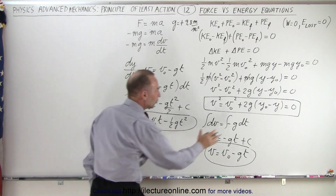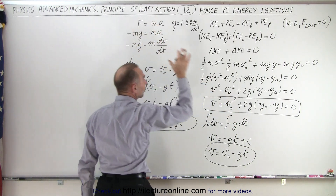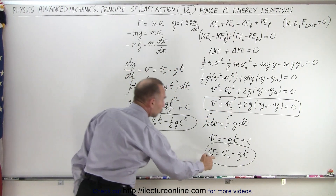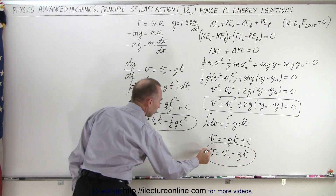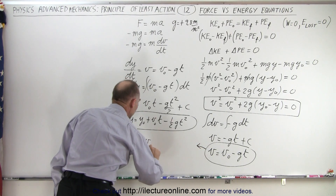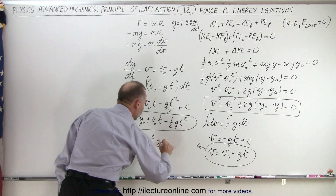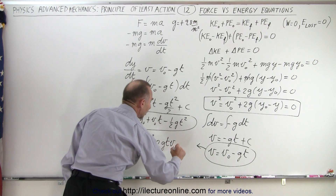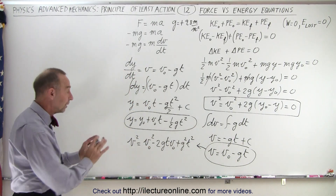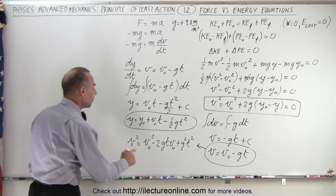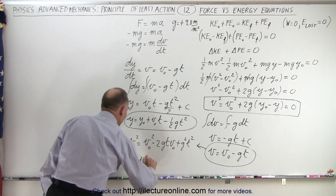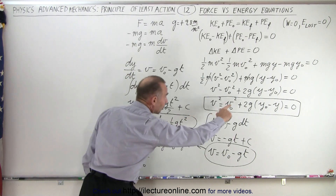We're trying to show that the F equals MA equation leads to the same kinematics equation. To do that, we square the velocity equation on both sides, giving V_final squared equals V_initial squared minus 2G t V_initial plus G squared t squared. Now we factor out 2G from the last two terms. V_final squared equals V_initial squared, and it's beginning to look like the target equation.